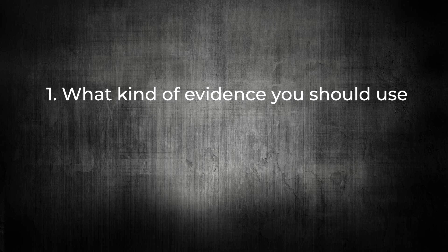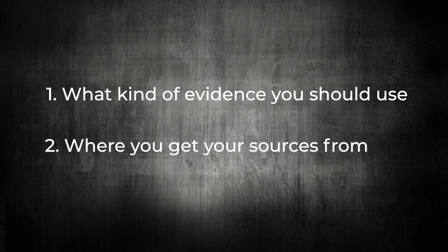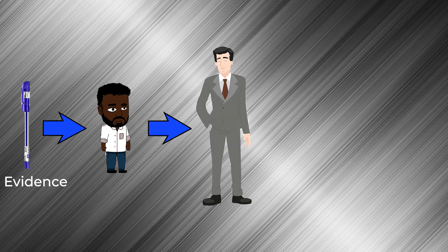There are two things you need to make sure: what kind of evidence you should use, and where you should get your sources from. What is evidence? Evidence is basically just observation. I know some parts of this are basic and boring, but please bear with me. I have a pen which I can observe is blue — I have first-hand evidence that this pen is blue. I can tell this to someone who hasn't seen the pen himself, and he knows it's blue because I told him.